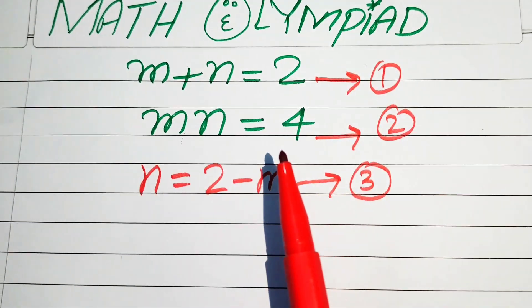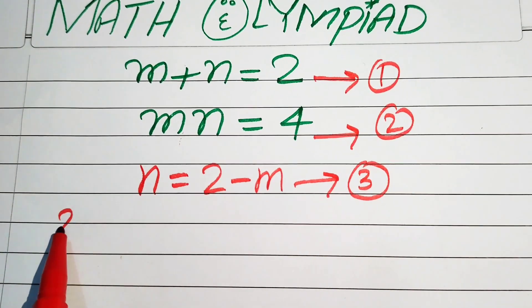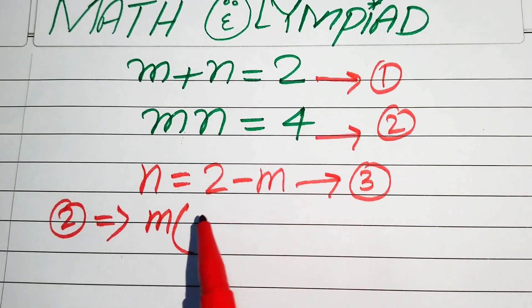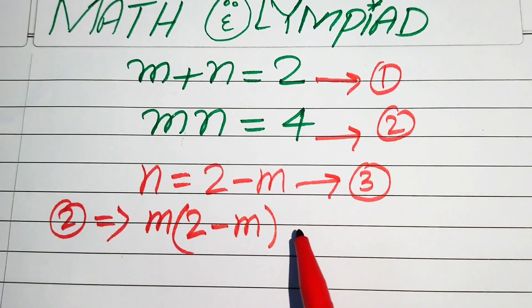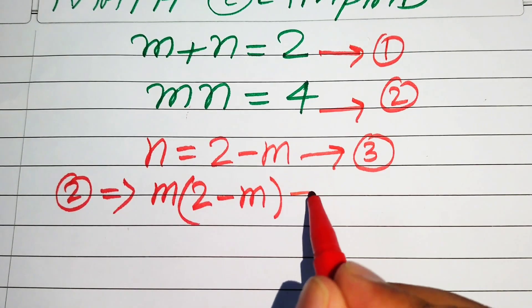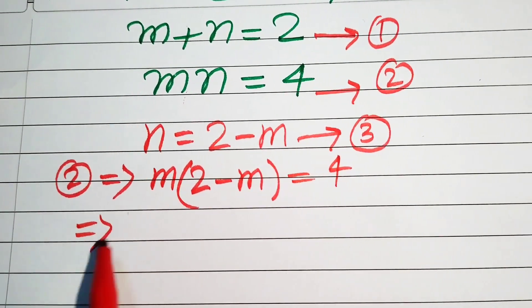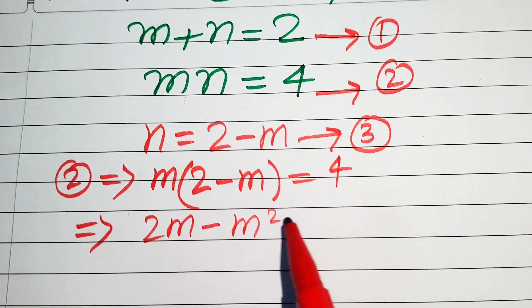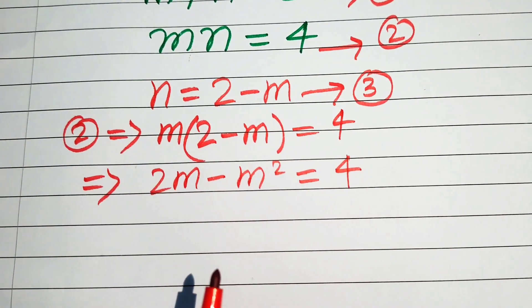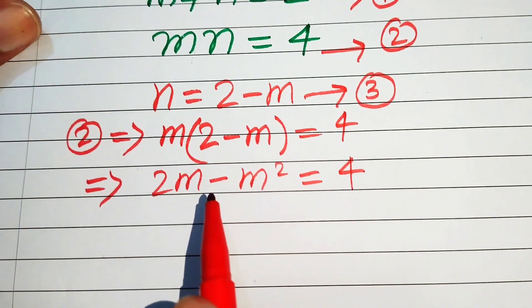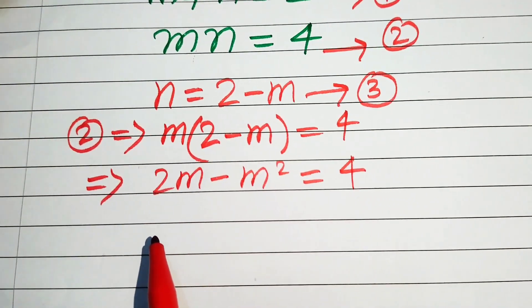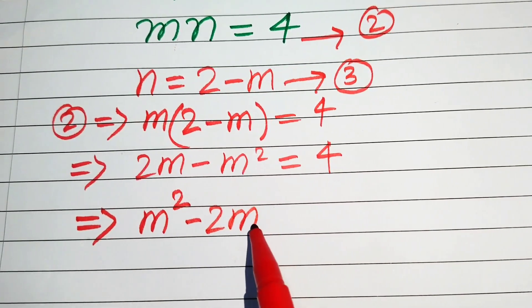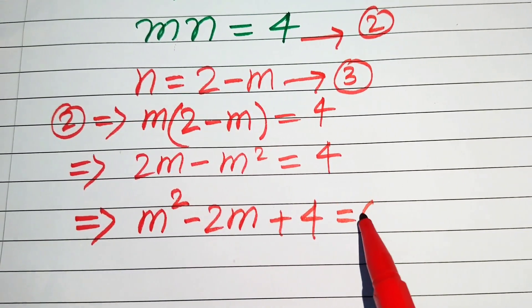Substituting the value of n into equation 2: m times n becomes m times (2 minus m), which equals 4. Expanding, we get 2m minus m squared equals 4. Rearranging all terms to the right hand side gives us m squared minus 2m plus 4 equals 0.